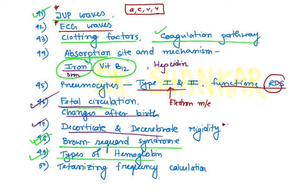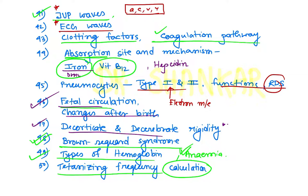Types of hemoglobin — fetal hemoglobin is important — and the difference between hemoglobin A, hemoglobin B, hemoglobin F. Thalassemia is important, as well as different hemoglobinopathies like sickle cell disease and different laboratory parameters used to detect these anemias. Types of hemoglobin and anemia topics are important, and also leukemia and platelet disease. Titration frequency is one of the important problem-based, calculation-based questions asked many times in INICT examination.